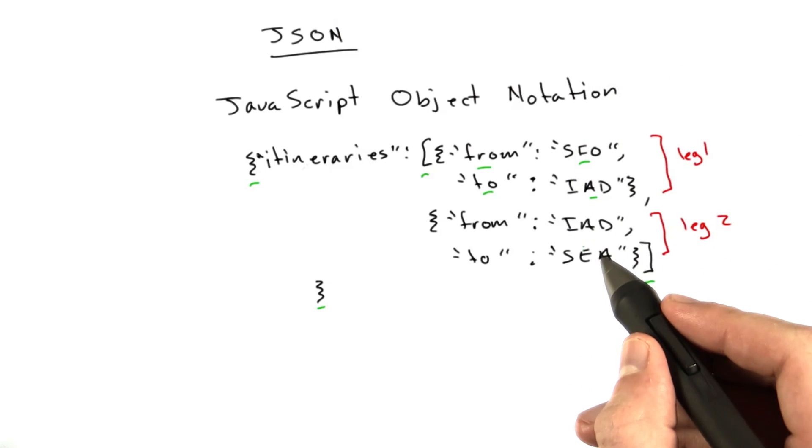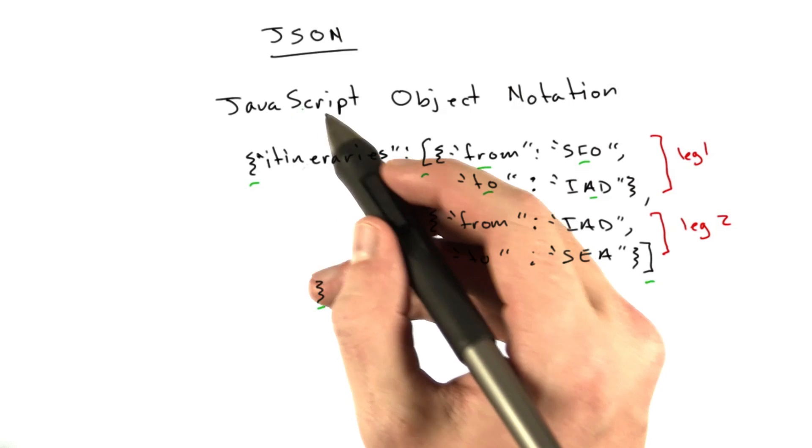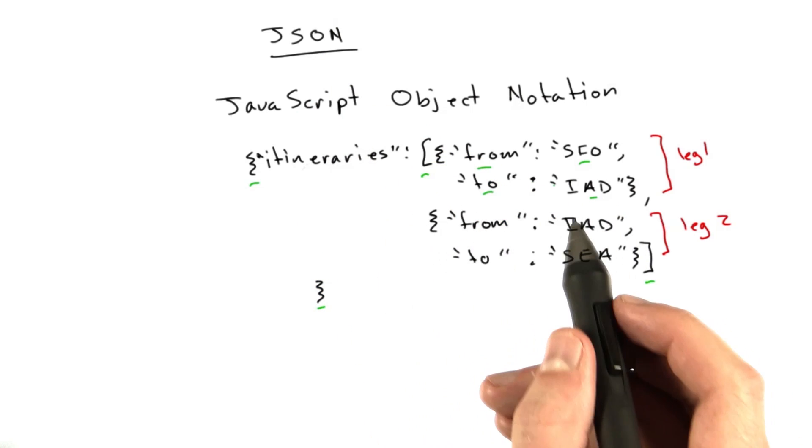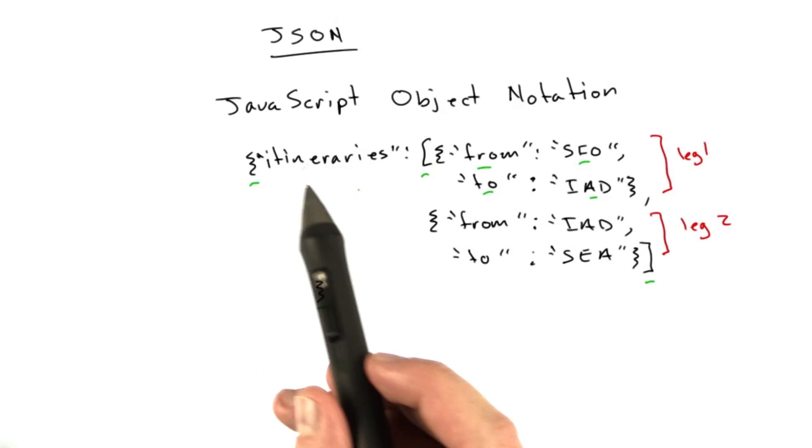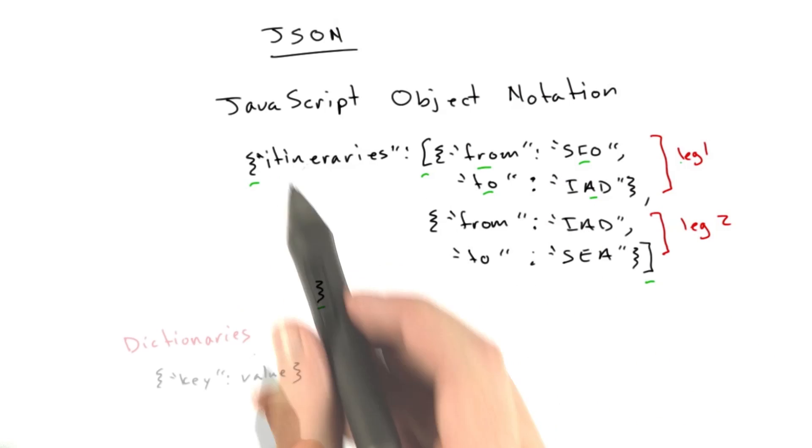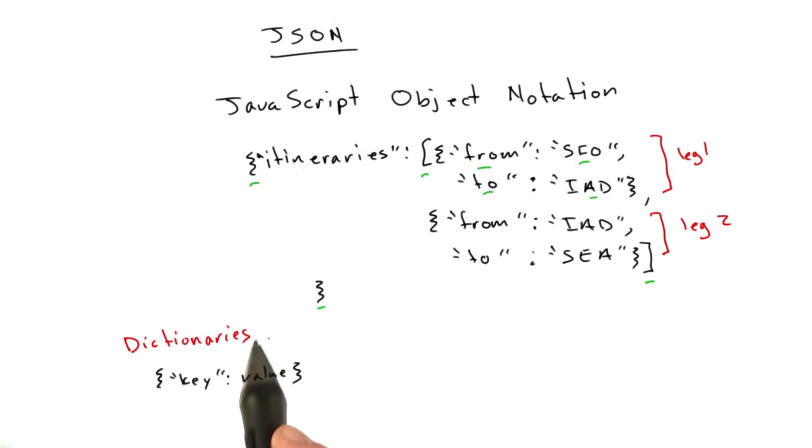You can express anything you can express in XML, you can also express in JSON. Except JSON is a little less verbose because you don't need these opening and closing tags. You can build things out of dictionaries, or a mapping or an object depending on what vocabulary word you want to use, hash table.